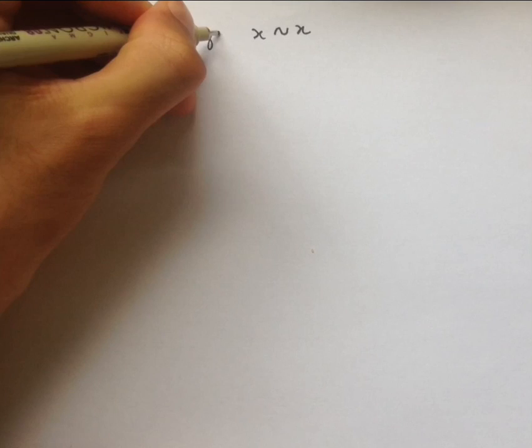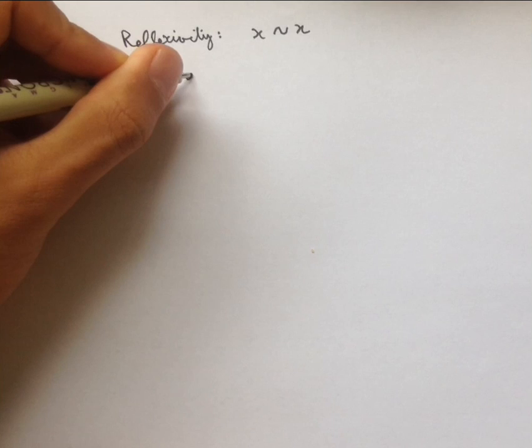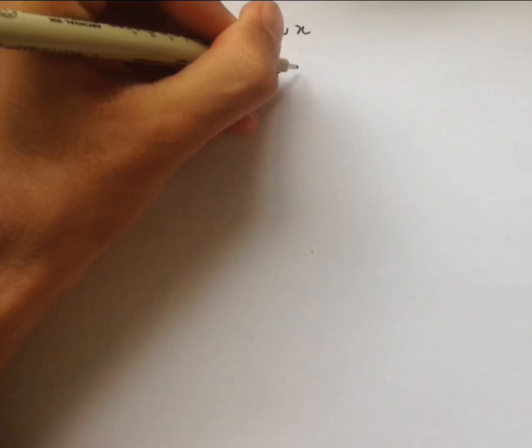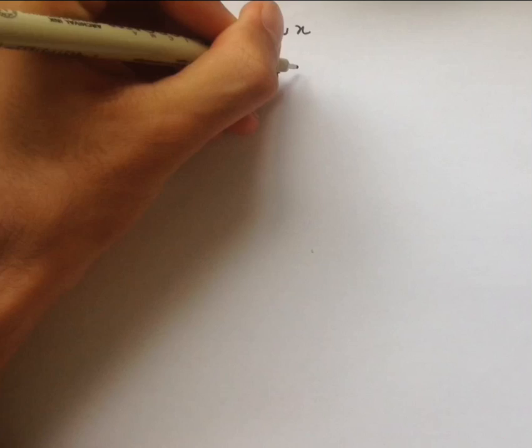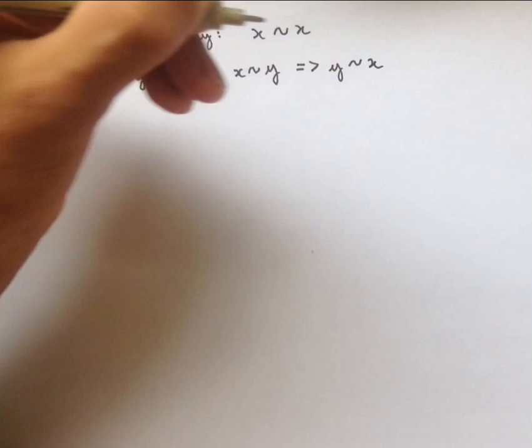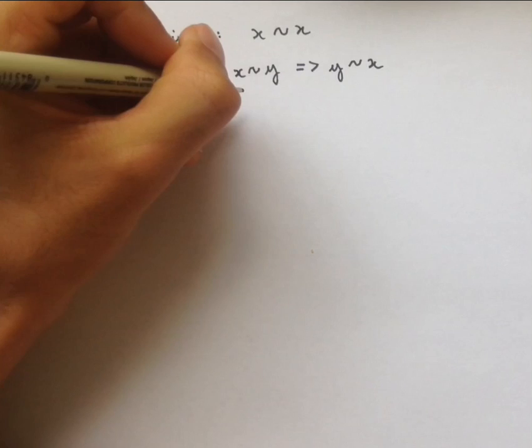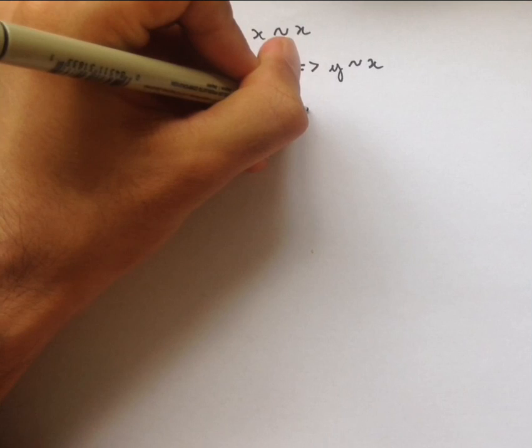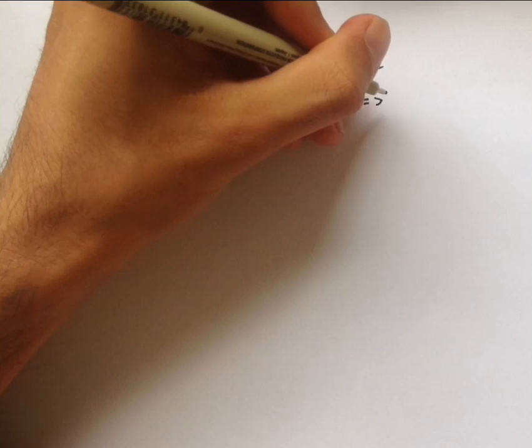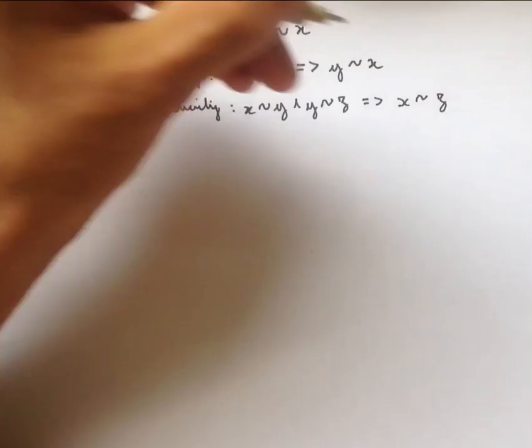This squiggle is going to represent my equivalence relation. The next is symmetry, which says that if x is related to y, then y is related to x. And finally, the third one is transitivity, which says that if x is related to y, and y is related to z, then x is related to z.